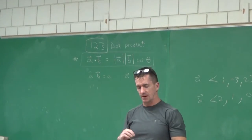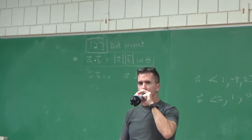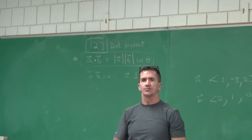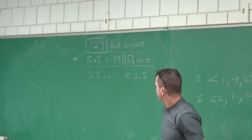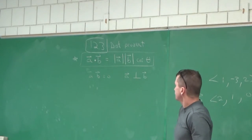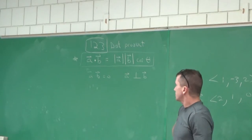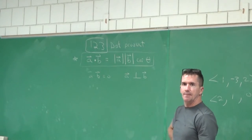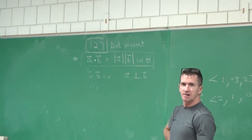So that's important. A dot B equals zero means vectors A and B are perpendicular — I'll use that perpendicular symbol — they're going to be orthogonal. Key statement: if A dot B is zero, then they're orthogonal. And if A is orthogonal to B, then A dot B will always have to be zero.